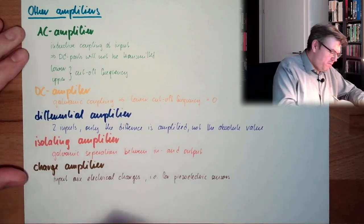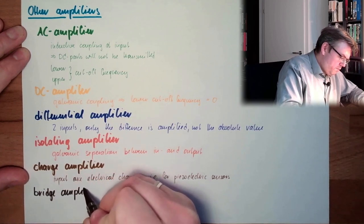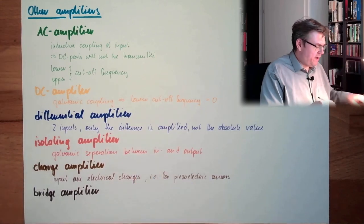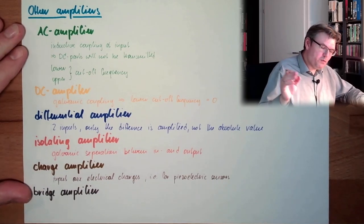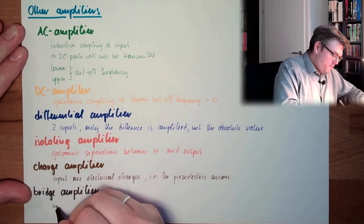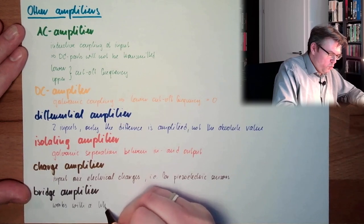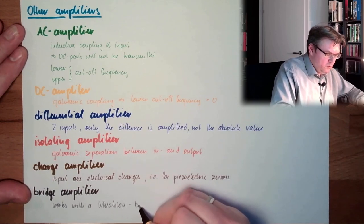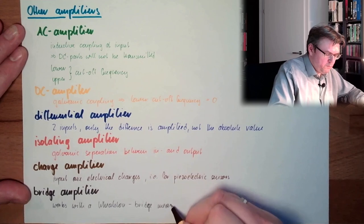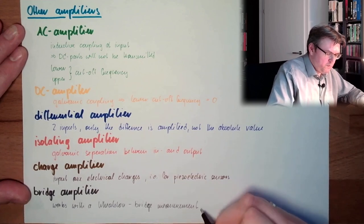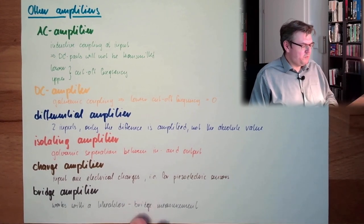And then we have a bridge amplifier. This bridge amplifier is specially designed for working with the Wheatstone bridge. What a Wheatstone bridge is, we will also discuss later. So these are the types of amplifiers which are out there.